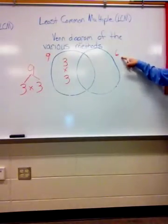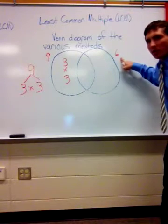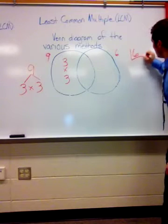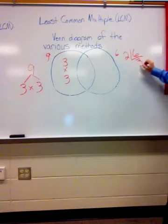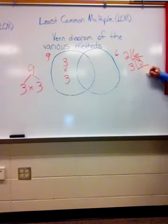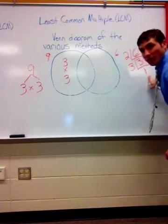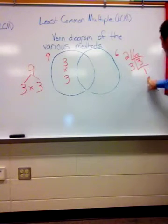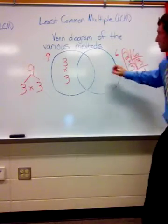Now I want to look at my second number, 6. I'm going to use the division ladder to find the prime factorization. So: 6 divided by 2 equals 3, and 3 divided by 3 equals 1. We don't use 1 because it's a special number — it's not prime or composite. So the prime factors are 2 times 3.